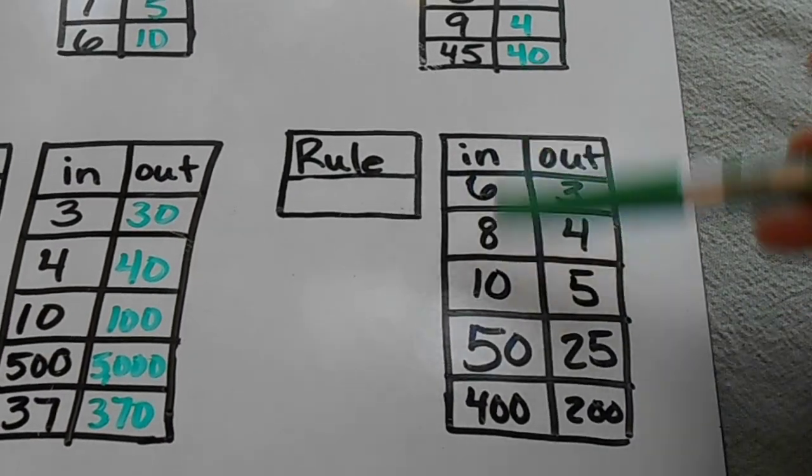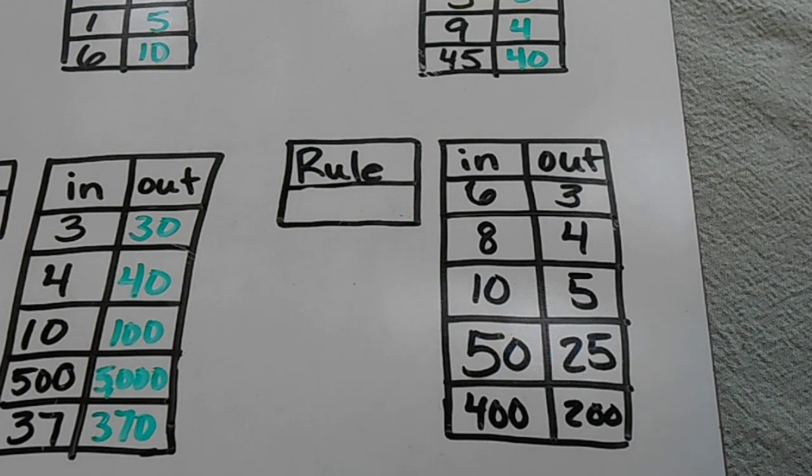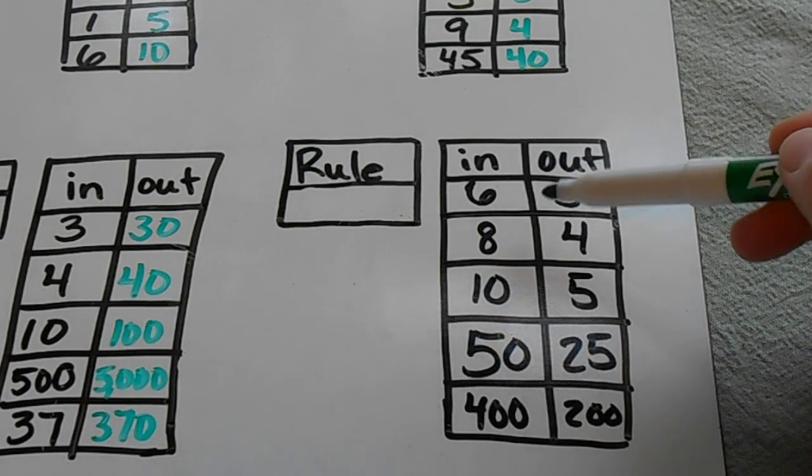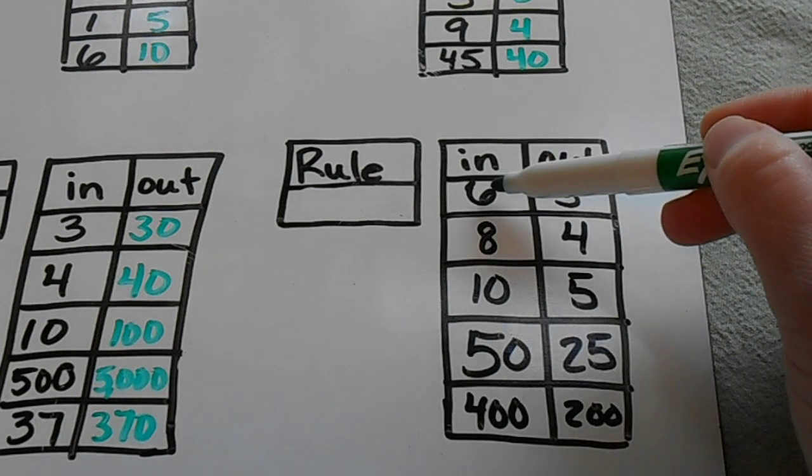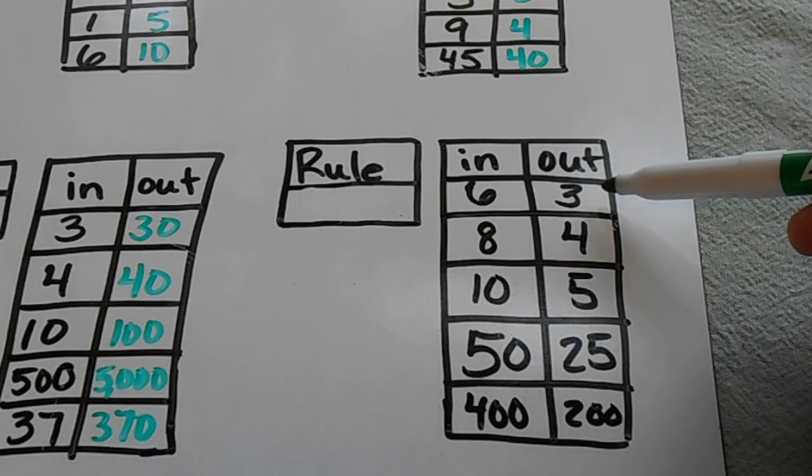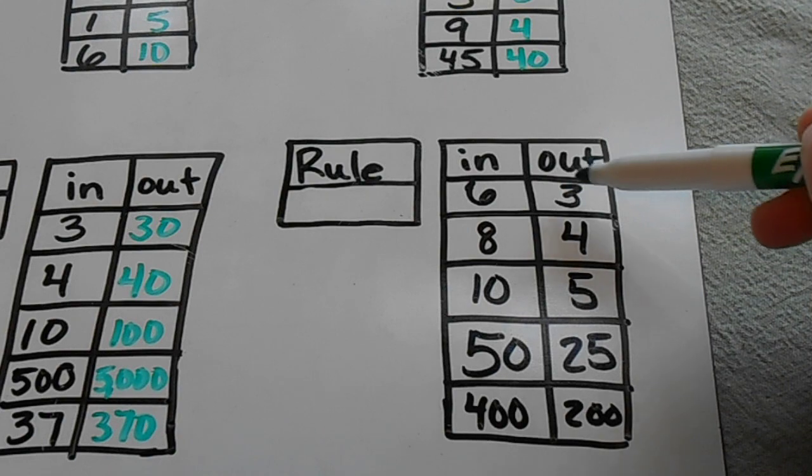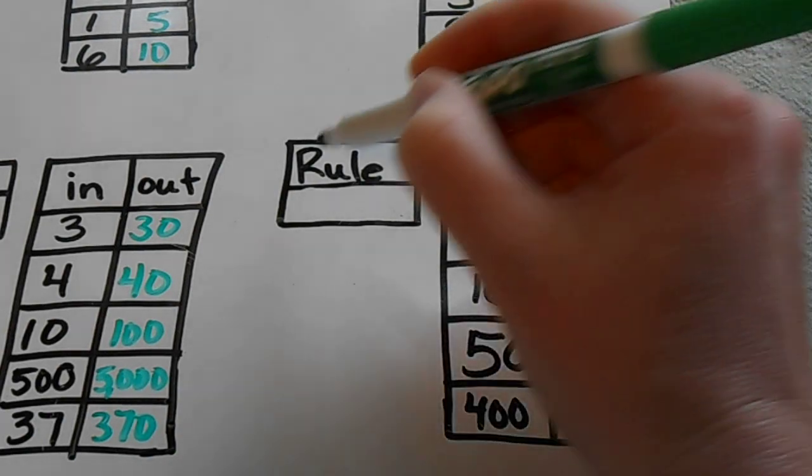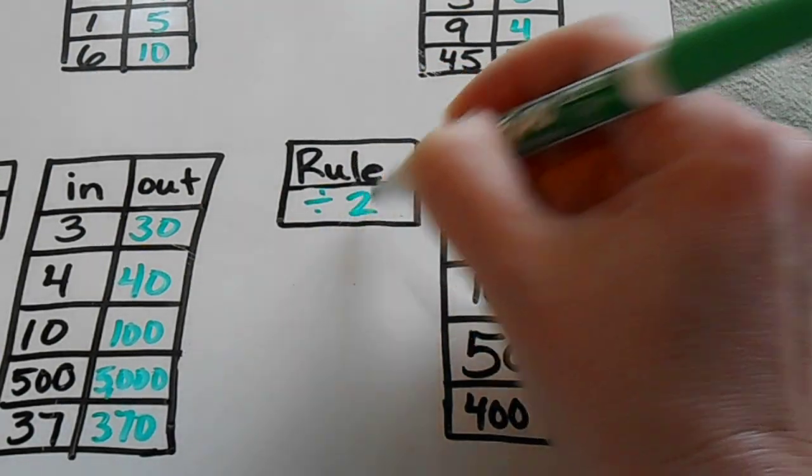And sometimes, like this one, the rule will be blank and these will be filled out and you have to figure out what the rule is. So I always teach my students to look at more than just one of them because this one, this first one, could be 6 minus 3 or it could be 6 divided by 2. And then as I look down to the other pairs of numbers, I can see that the rule is divide by 2.